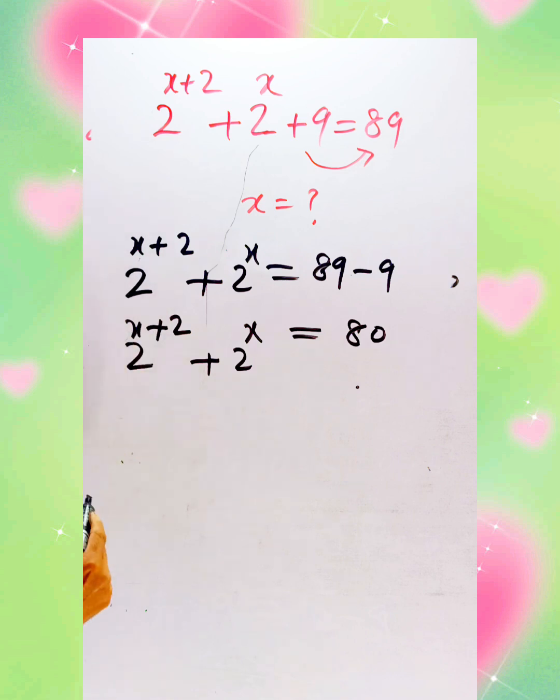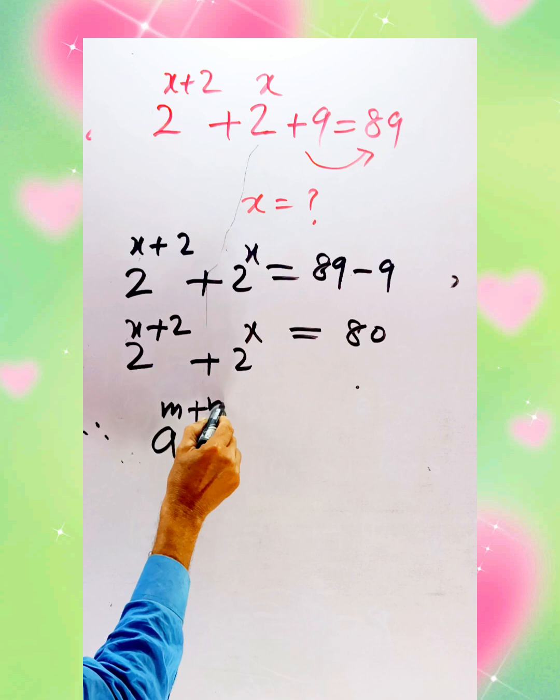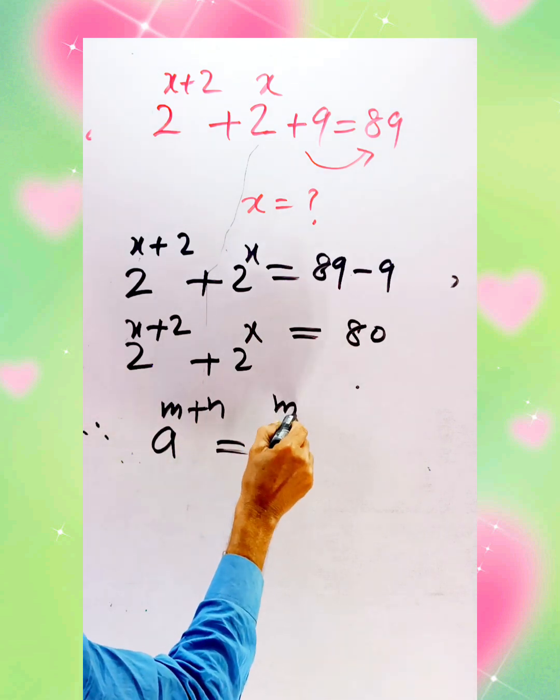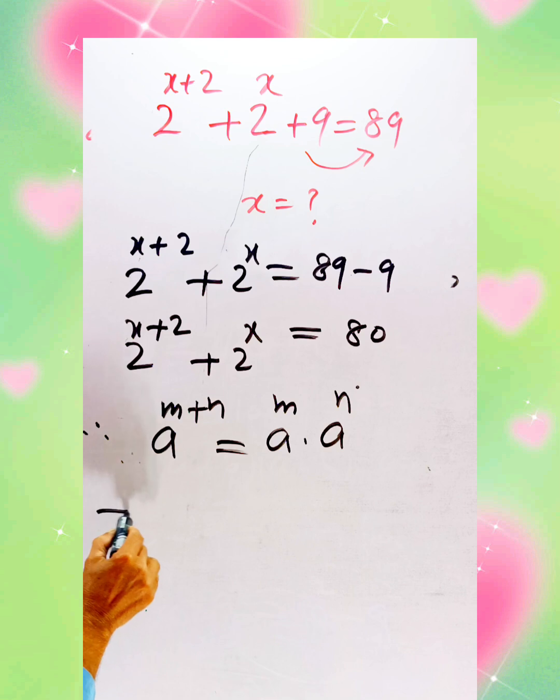Now according to the rules, we can simplify this term using the rule: a^(m+n) = a^m · a^n. We replace this result according to this rule.